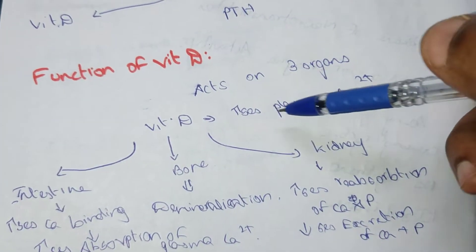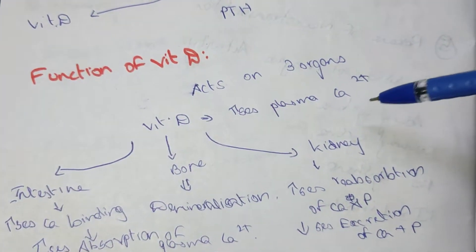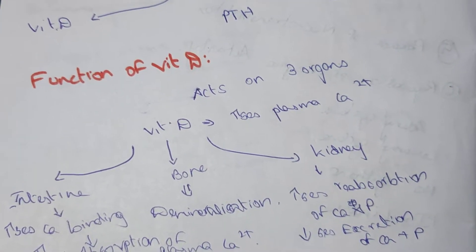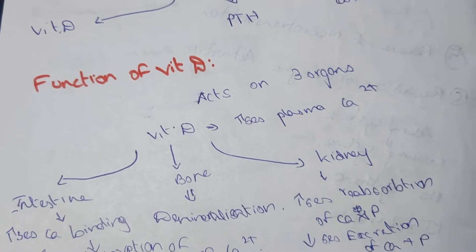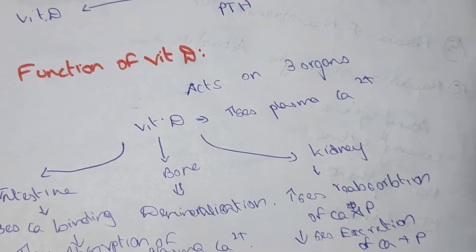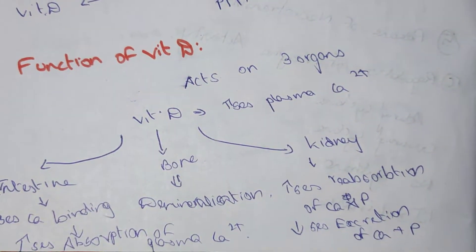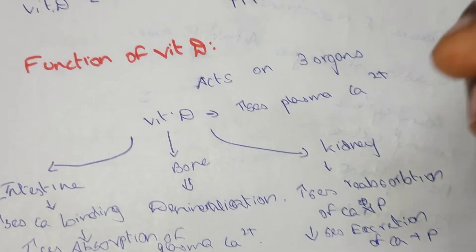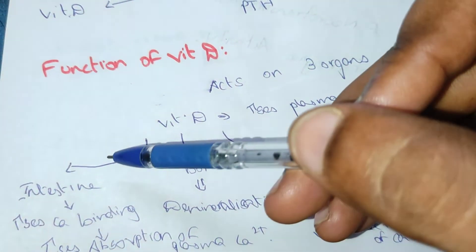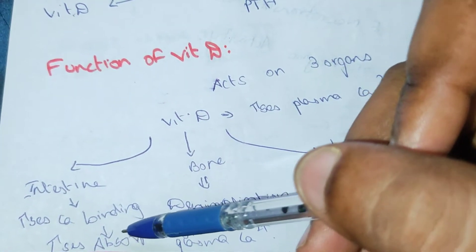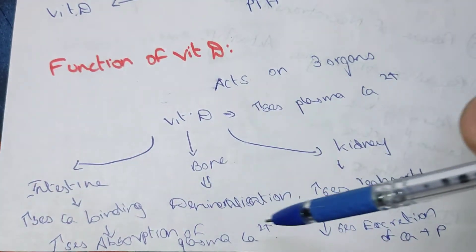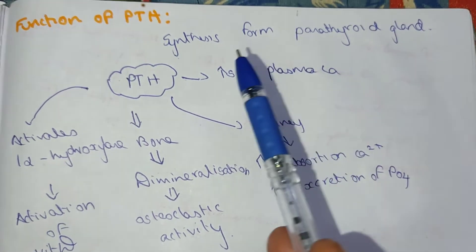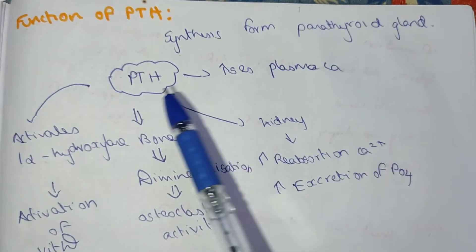The main function of vitamin D is to increase plasma calcium levels. In the kidney, it increases reabsorption so more calcium is retained, and it decreases excretion so less calcium is lost. In bone it causes demineralization, and in the intestine it increases calcium binding and absorption.